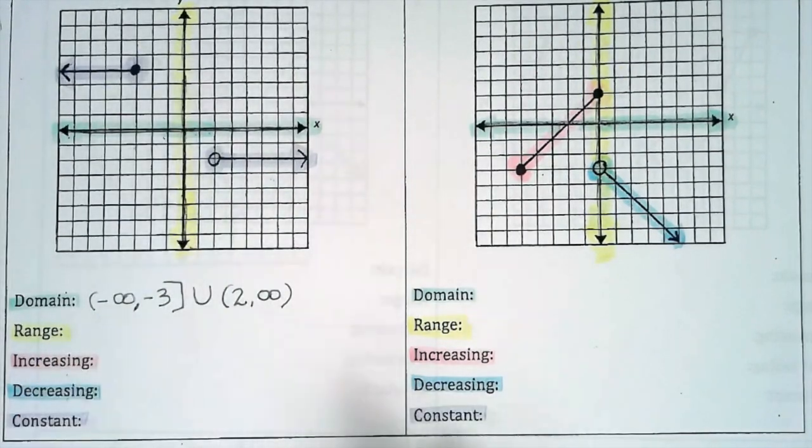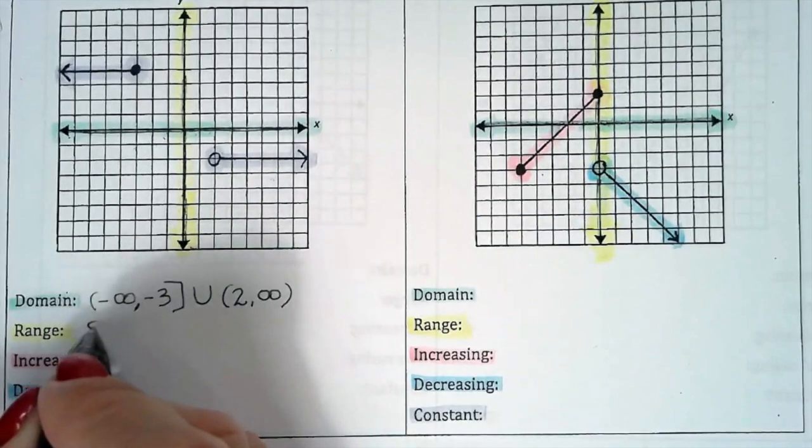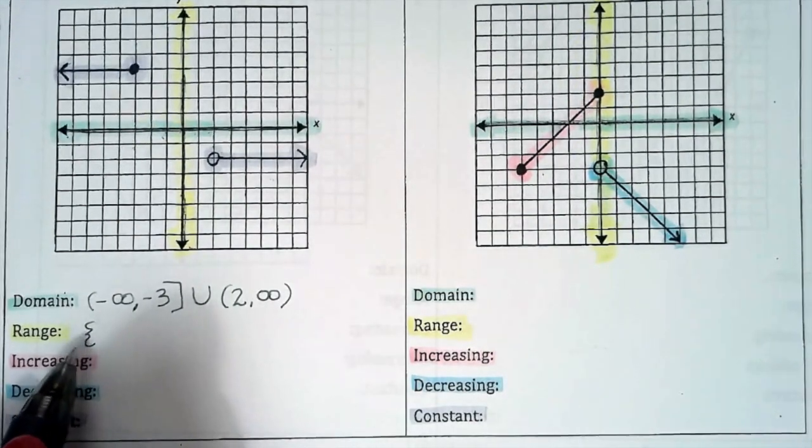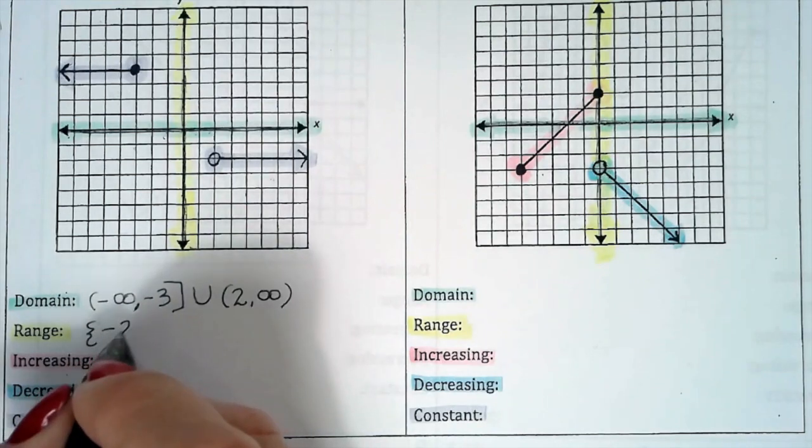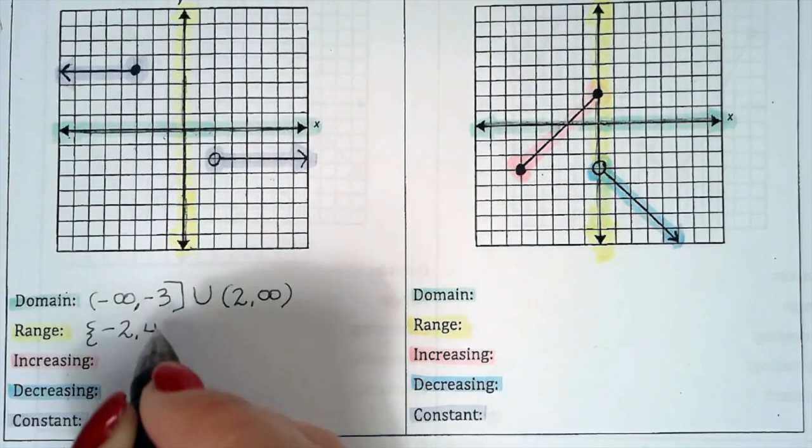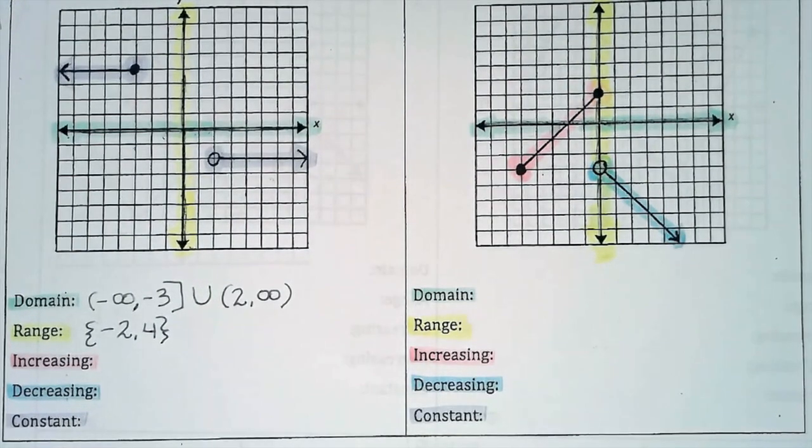Since there's two points and I can count them, I'm going to use set builder notation. So I'm going to list negative 2, comma 4. It's not an interval. Set builder notation. And then close out my bracket right there.